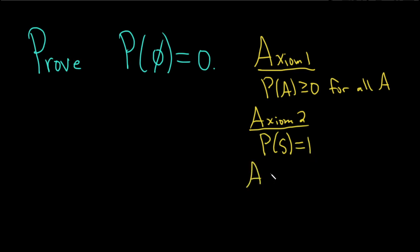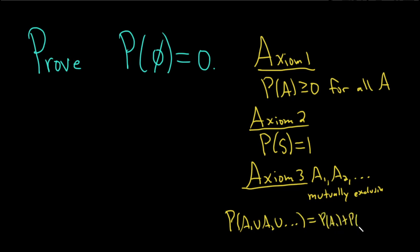And axiom 3 says that whenever you have some events A1, A2, etc., if these are mutually exclusive events, then when you take the probability of the union, you get the sum: P(A1) plus P(A2) plus dot dot dot.